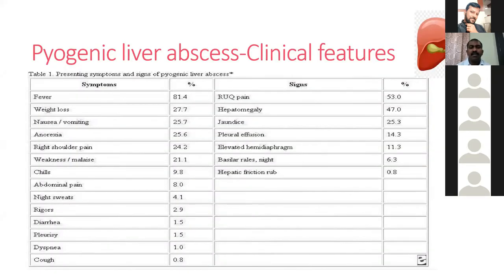The most common symptom of pyogenic liver abscess is fever, around 81%, followed by weight loss around 27%, nausea and vomiting 25%, anorexia and right shoulder pain around 25%. Signs include right upper quadrant pain around 53%, hepatomegaly around 47%, and jaundice around 25%. Jaundice is more common in pyogenic compared to amoebic liver abscess.